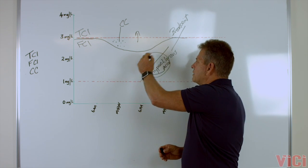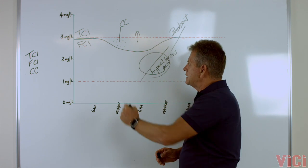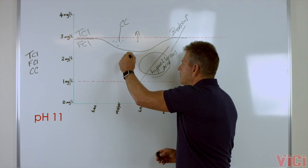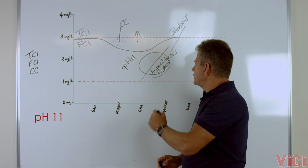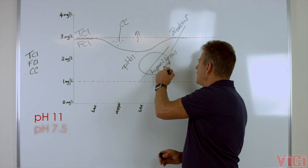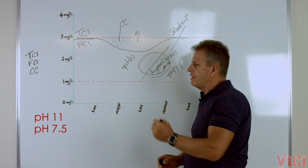Now the thing about the total chlorine molecule is it has a pH of around 11, but for hypochlorous acid to work efficiently, it likes a pH of around 7.5.